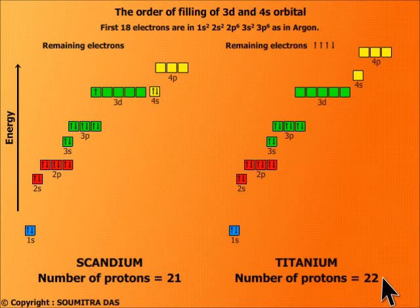For titanium there are 22 protons. These 22 protons bring down the 3d orbital energy below 4s orbital energy. The lowering of 3d orbital will be more than was in the case of scandium because now 22 protons are there instead of 21.